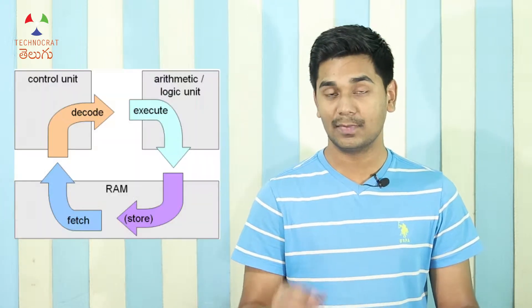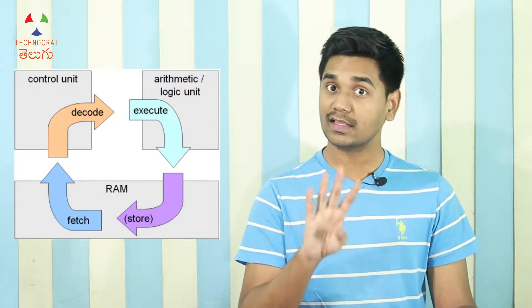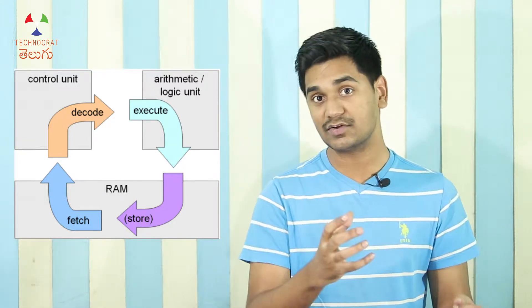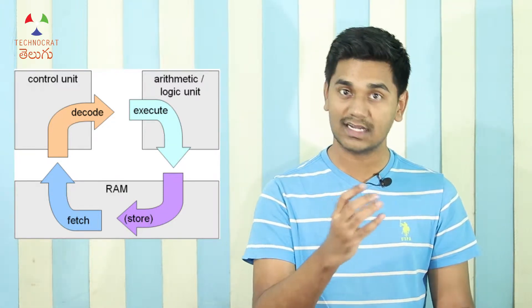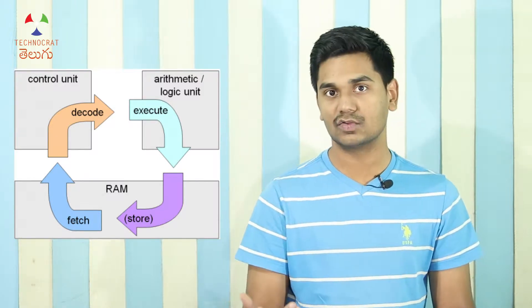We are talking about how programs and apps use the processor. A processor only does mathematical calculations through continuous instructions. Now we have four parts of instruction execution: the instructions are fetched, decoded, executed, and the results are stored. The number of clock cycles determines the clock speed and therefore the performance automatically.